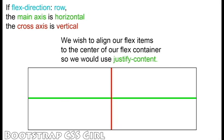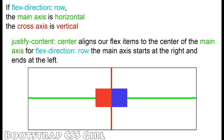Our FlexDirection is set to Row, and we would like to align our FlexItems to the center of our container horizontally, so we will use the JustifyContent property. To align our FlexItems to the center horizontally, we set JustifyContent to Center. This moves our FlexItems to the center of our main axis. With FlexDirection set to Row, the main axis is our horizontal axis.